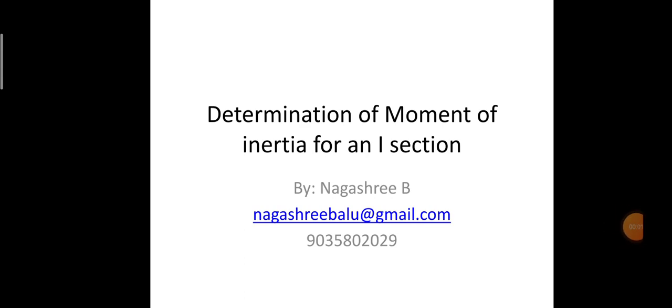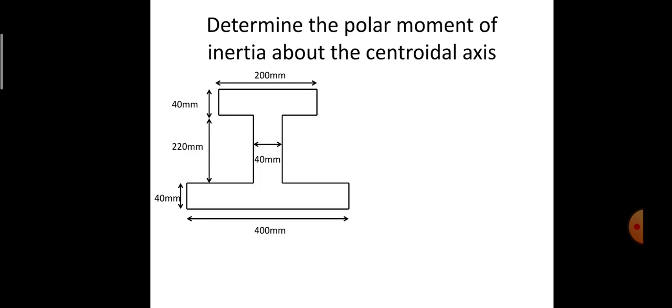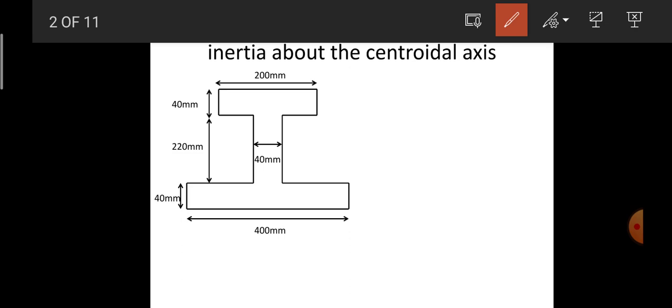Hello everyone, welcome to my civil engineering YouTube channel. Please subscribe to this channel and hit the bell icon to get notified when I post new videos. Today I'll be discussing how to determine the moment of inertia for an I-section. You can observe the sketch here where the geometrical shape is in the form of an I, and we need to determine the polar moment of inertia about the centroidal axis, with reference to the X as well as Y axis.